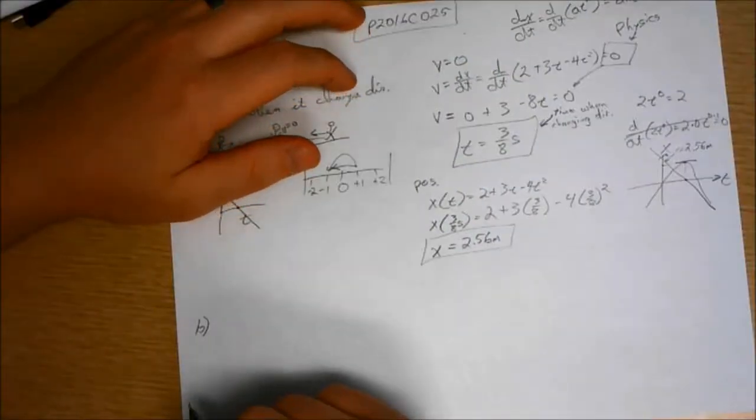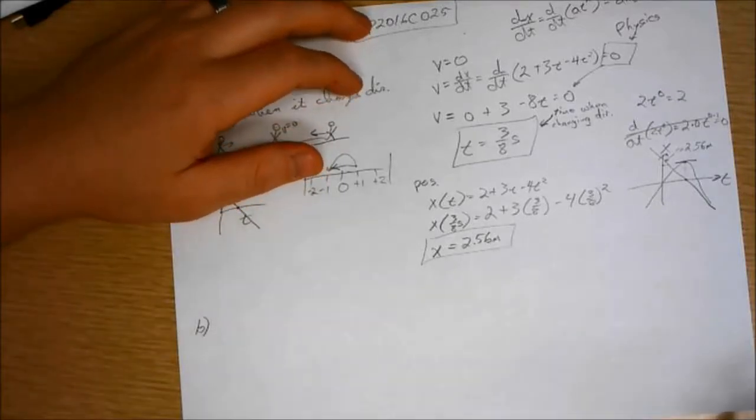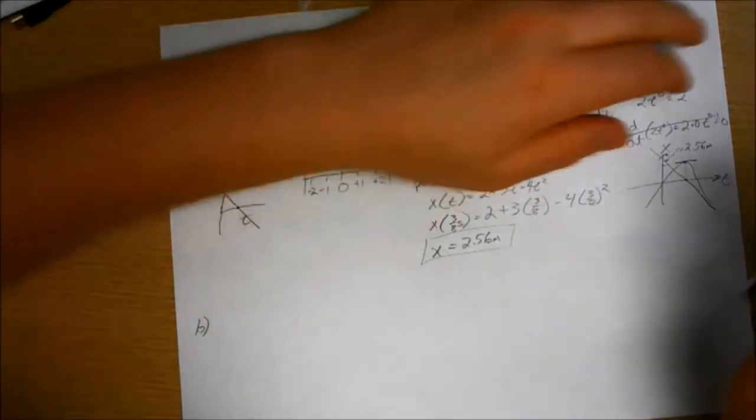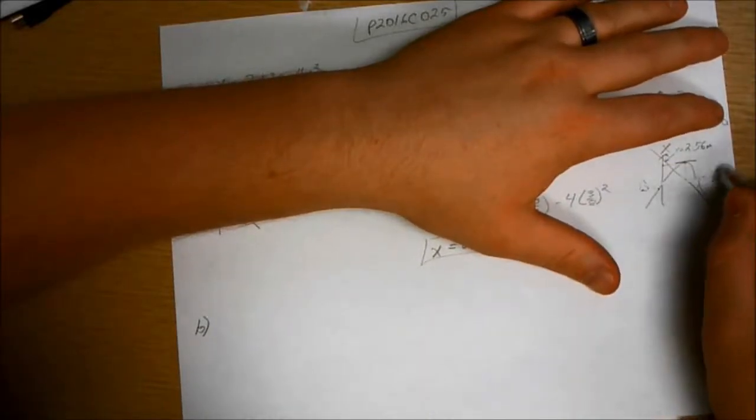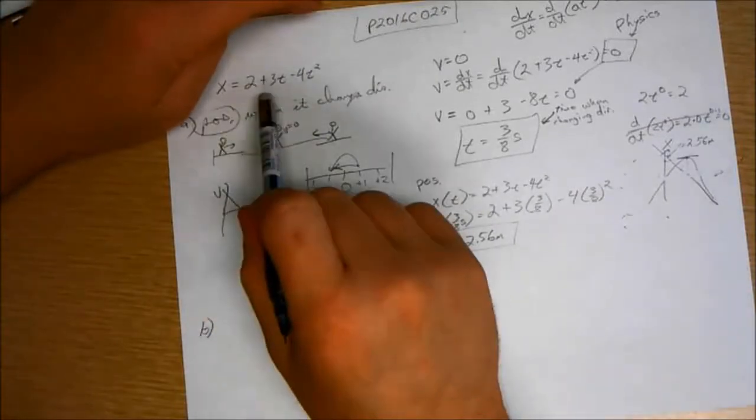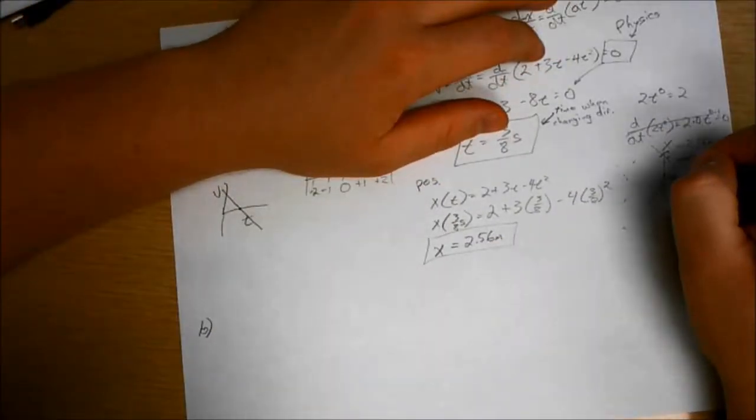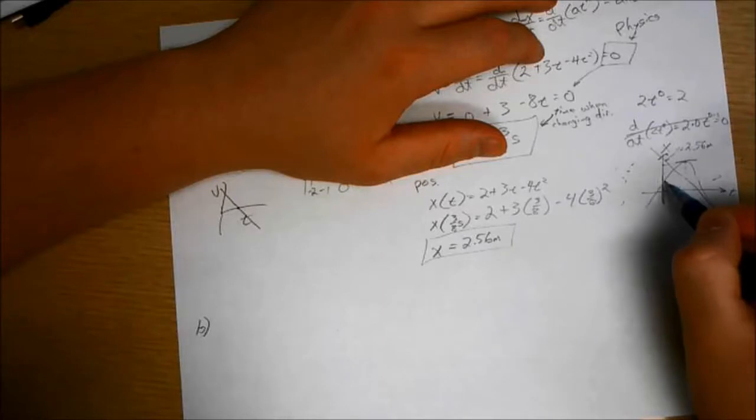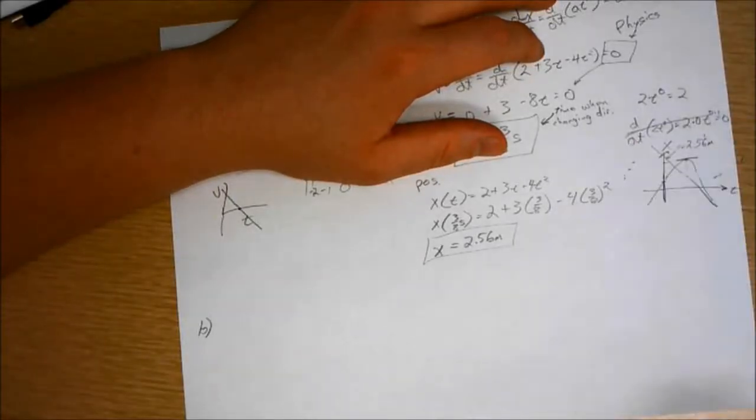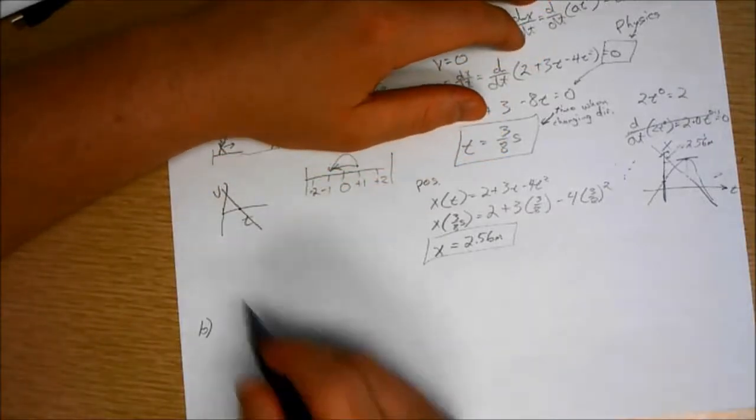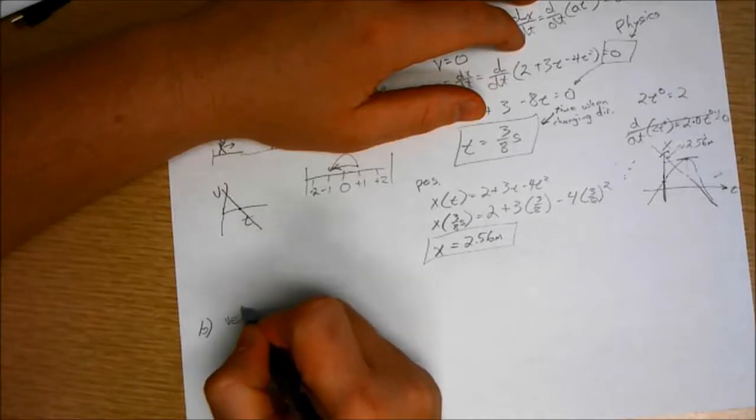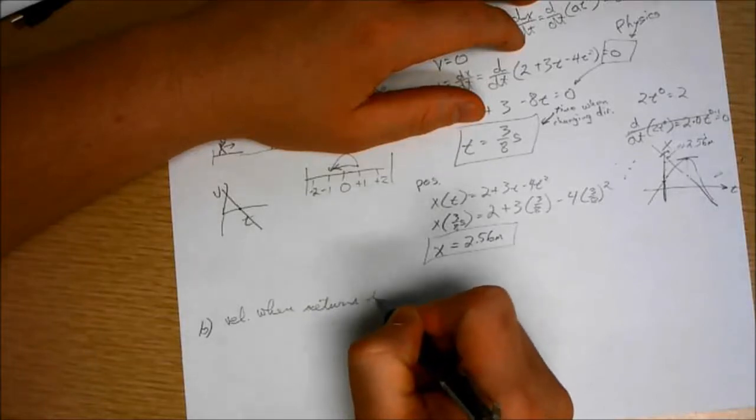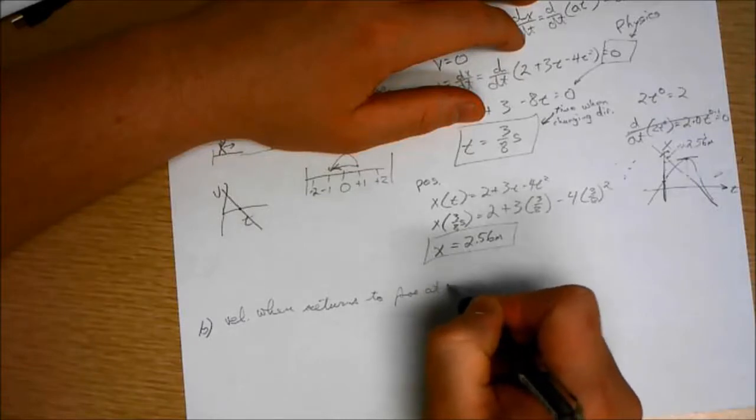Part B of the problem says determine its velocity when it returns to the position that it had at t equals 0. Okay. For one thing, I didn't draw this graph accurately because at t equals 0, x does not equal 0. So if I redraw the horizontal axis like this, this is more correct. At t equals 0, x is somewhere above the origin. So let's find what position it is.